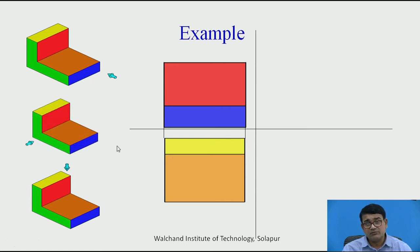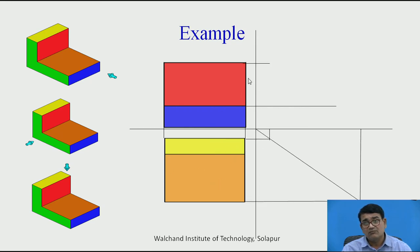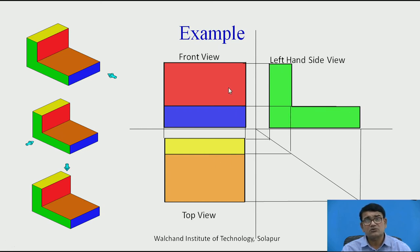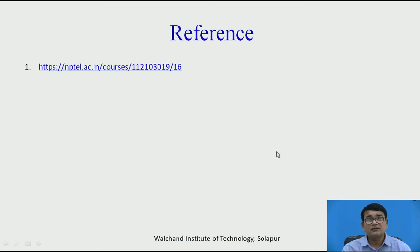Now for the side view: you draw a 45-degree line, then draw the respective vertical and horizontal generators, rotate through the 45-degree line, and whatever planes are parallel to you from that direction, you draw them. The brownish color plane again appears as an edge view in the side view. This completes the orthographic projection showing front view, top view, and left-hand side view. Reference credit to NPTEL.